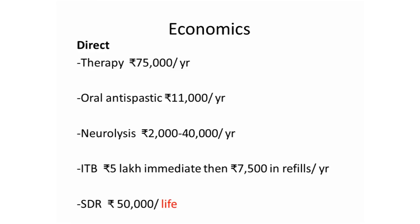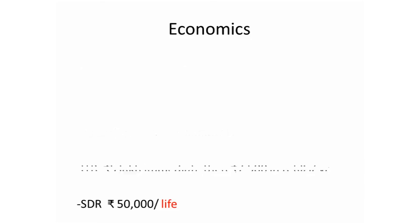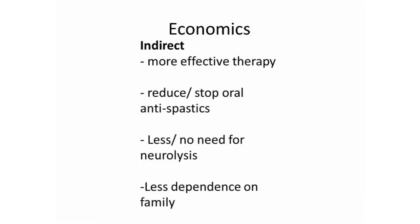On economics: therapy alone costs about one lakh rupees per year; oral antispastics, 11,000 rupees; neurolysis, 2,000 to 40,000 rupees per year; intrathecal baclofen, five lakhs upfront and 7,500 rupees in refills per year; versus SDR at about 50,000 rupees for the rest of their life. The indirect benefits are significant: if you treat tone properly, therapy becomes much more effective, you can reduce or stop oral antispastics, may not need neurolysis, and the patient may become less dependent on their family — which is ultimately the goal.